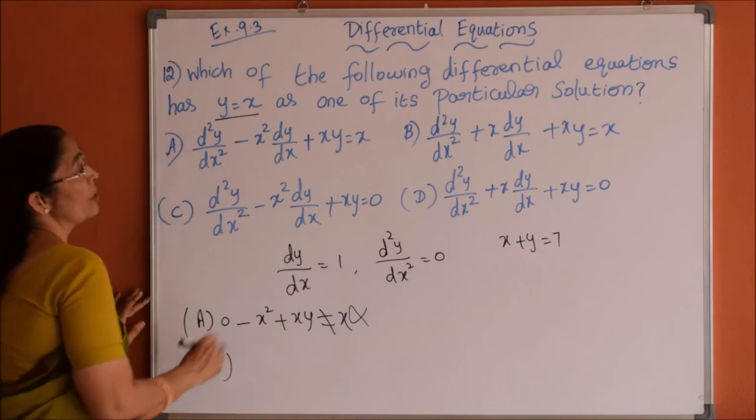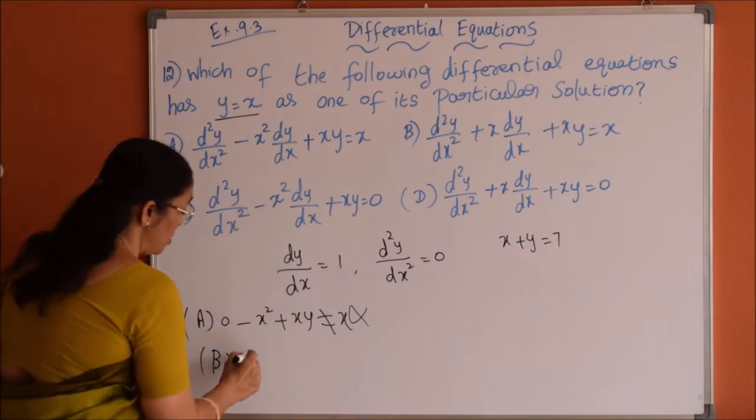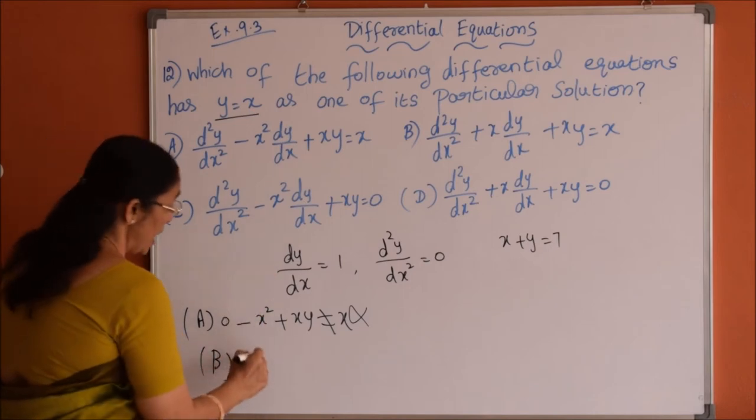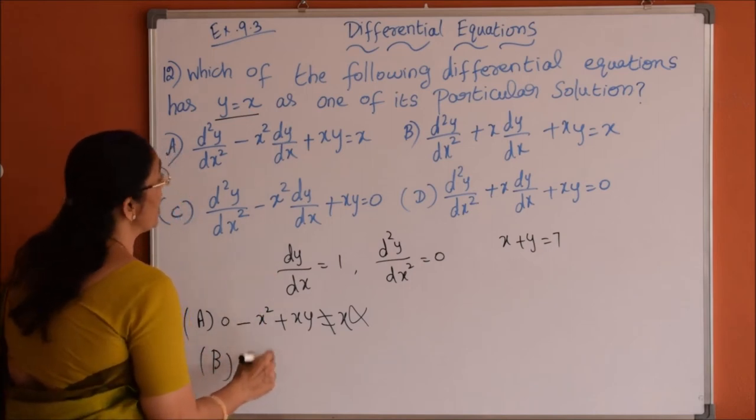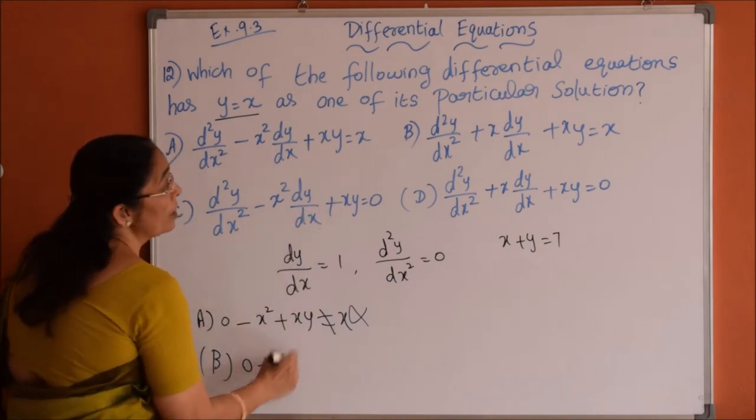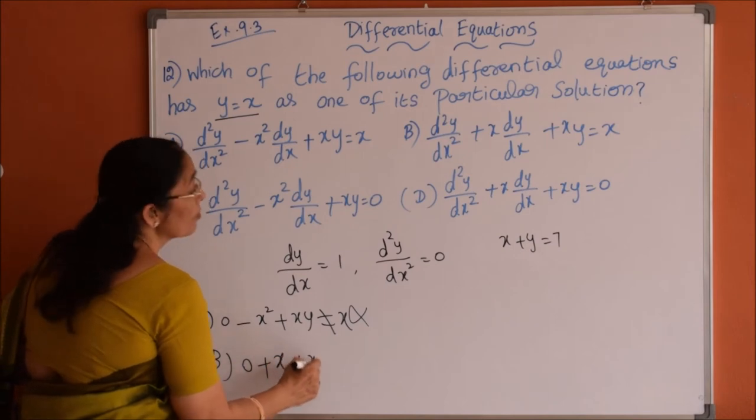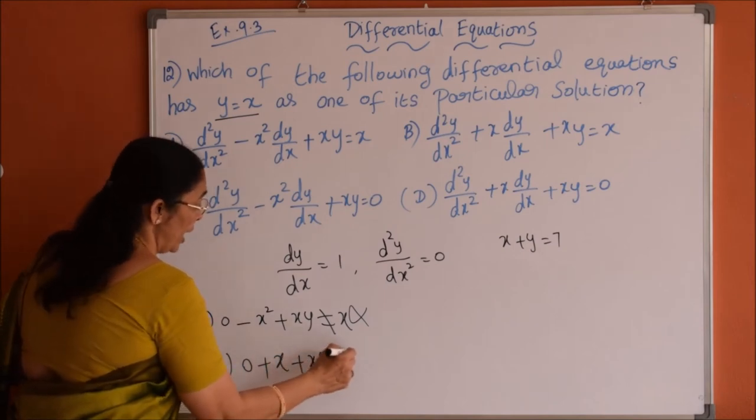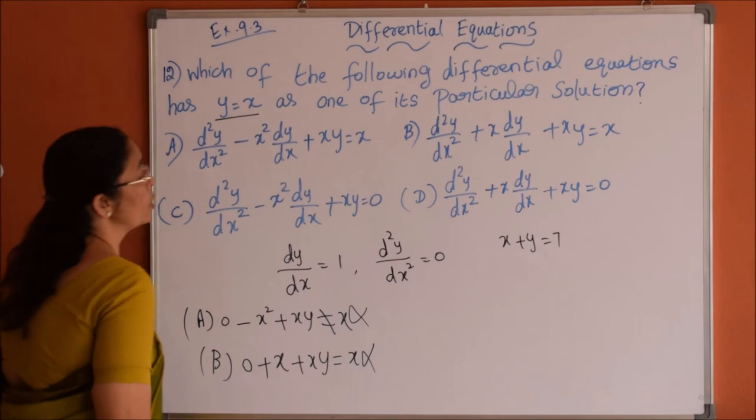Coming to option B, d square y by dx square is 0 plus x into dy by dx. So x equals x. Again option B is ruled out.